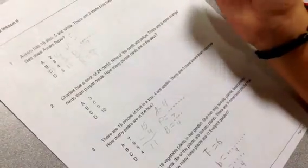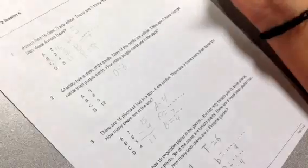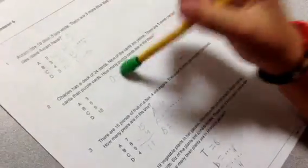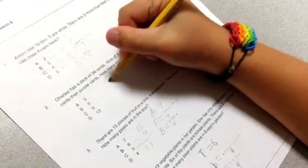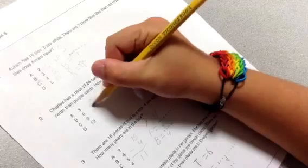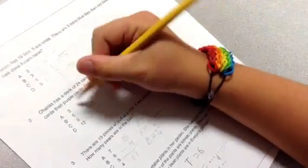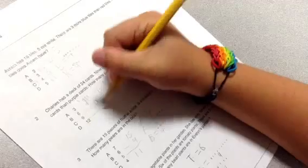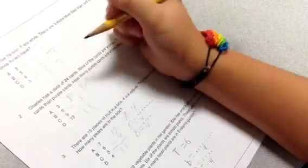So we are going to put Y for yellow and 9. And then we are going to subtract 24 minus 9 equals, so 14 minus 9 equals 5. And then we have 15.